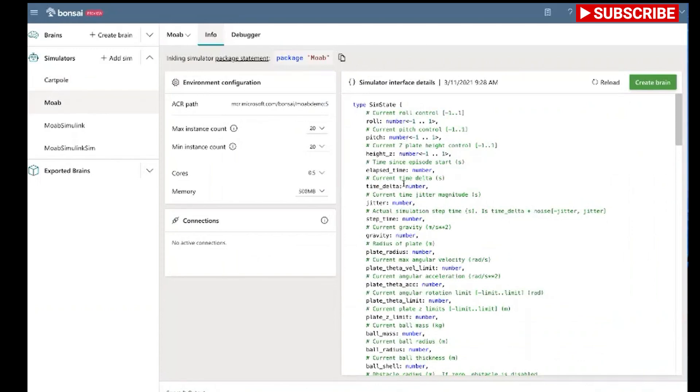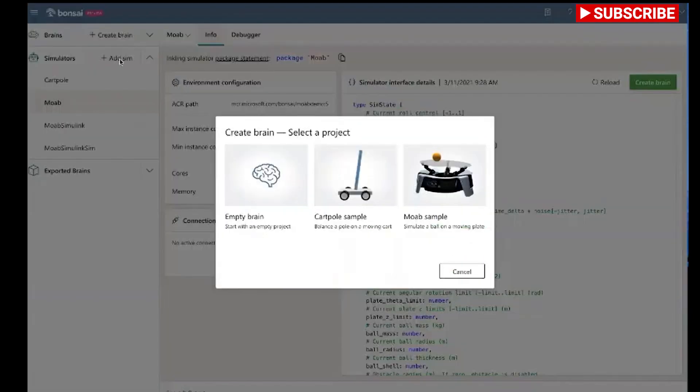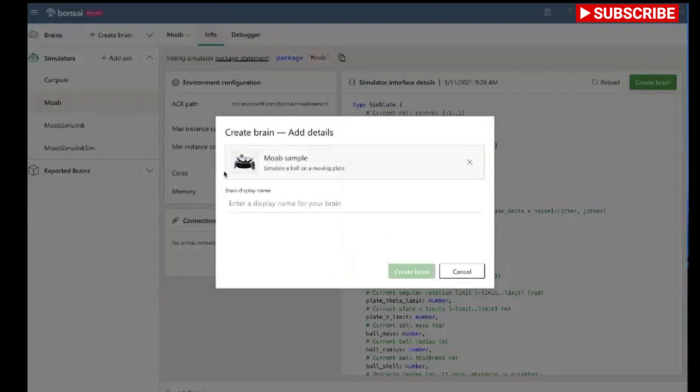In other words, when I talk about the Bonsai brain, it's a high-level AI model built by combining a few techniques. Those include deep reinforcement learning, simulation, and machine teaching, and leveraging these technologies you're able to generate optimization and control actions for your system.